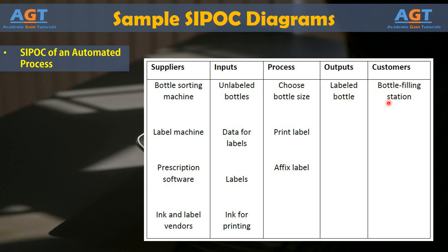The process puts labels on bottles that are to be filled with corresponding medications. The scope of the process is only the labeling of the bottles. Because this is a process within a chain of automated processes, almost all of the components are machines, processes, and things. Prior to labeling, a machine sorts bottles by size and feeds the labeling station as needed. After the labeling is done, another station fills the bottles.